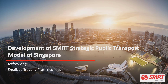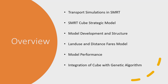It is a PT model that simulates the public transport system in Singapore. Before I dive into the strategic model, I would like to start with a short history of our transport simulation in SMRT. We will look at some of the key events that shaped the direction of planning and model development. After that, we will dive into the SMRT strategic model — how it was developed and its structure. I will highlight key modules like the land use model and the distance fare model. Then we will look at model performance comparing actual versus model results. Finally, we will share our future plans for CUBE, which is to integrate CUBE with our genetic algorithm, and explain what GA is and how we are using it in consultancy projects.